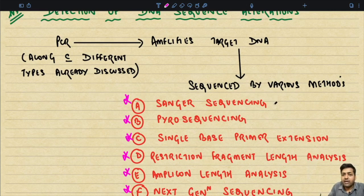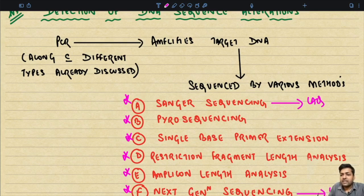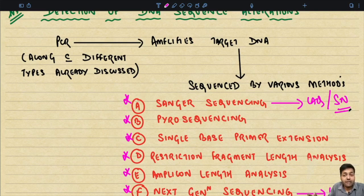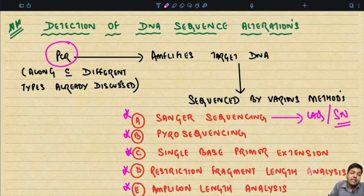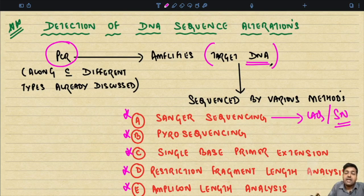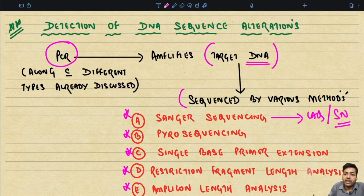Remember: pyrosequencing is one form of NGS. Before analyzing a DNA sequence you need enough amplified DNA, obtained by PCR — polymerase chain reaction — which amplifies the targeted DNA of interest where alterations are suspected. Such amplified DNA is then sequenced by various methods. Sanger sequencing and next generation sequencing are the most important — they can be asked as long answer questions or short notes in exams. Please read about PCR before studying these sequencing methods, as it is essential background.